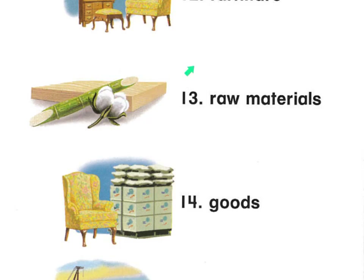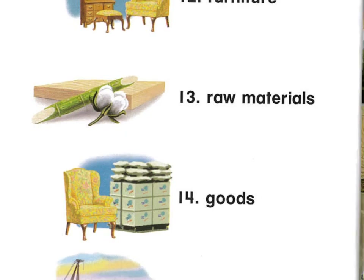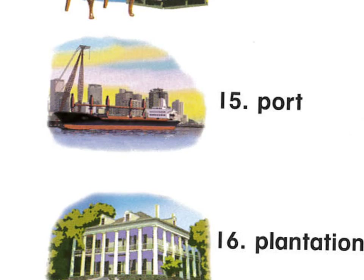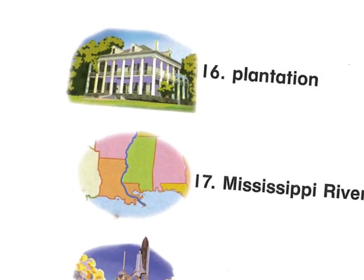Raw materials are used to make goods — items that can be sold. We have furniture made from cotton and lumber, and sugar. When you have goods for sale, you need to transport them from a port. A port is a place where a large shipping boat picks up heavy boxes full of goods, then leaves and delivers those goods at another port. The South has some famous ports.